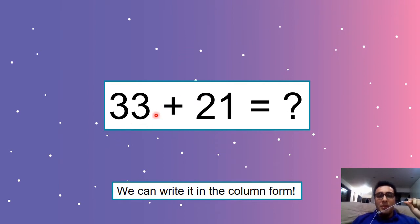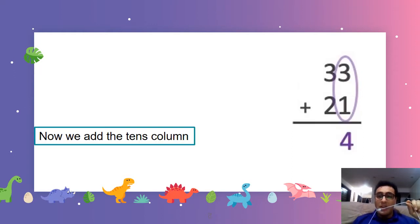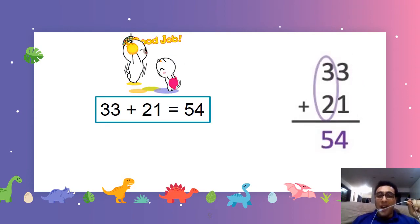Look at this number. 33 plus 21 equals, we don't know. We have to write it in the columns form if we cannot do it in our head. Columns form is like this. We start with 33, right? Plus 21. This is the ones. This is the tens, remember? 3 plus 1 equals 4. Now we go to the tens column. 3 plus 2 equals 5. Super easy. 54.